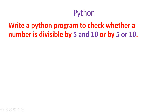Hello friends, we are going to write a Python program to check whether a number is divisible by 5 and 10, or by 5 or 10. That means the given number is completely divisible by 5 and 10 — both will return the remainder as 0. For 5 or 10, either 5 or 10 will return the remainder as 0.